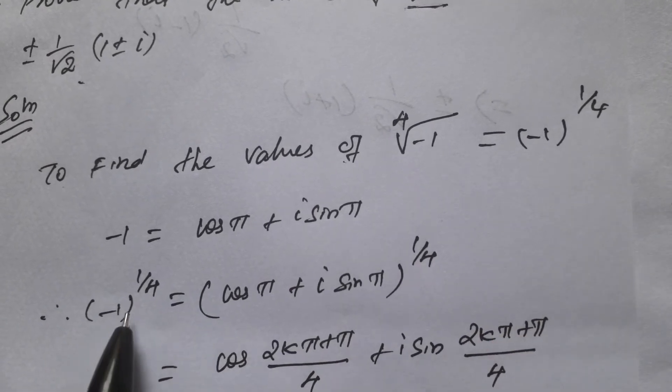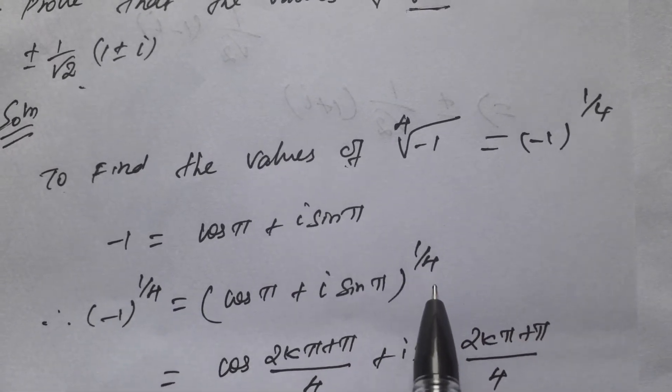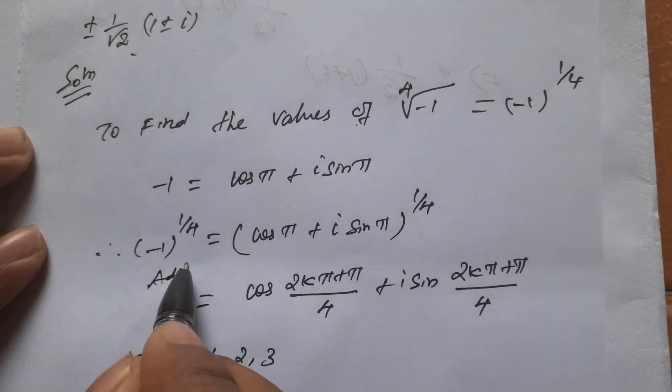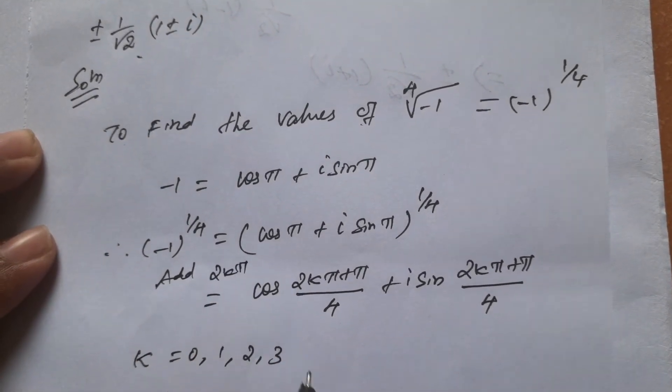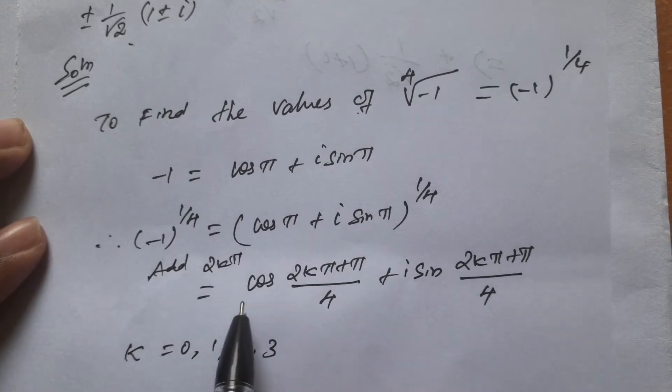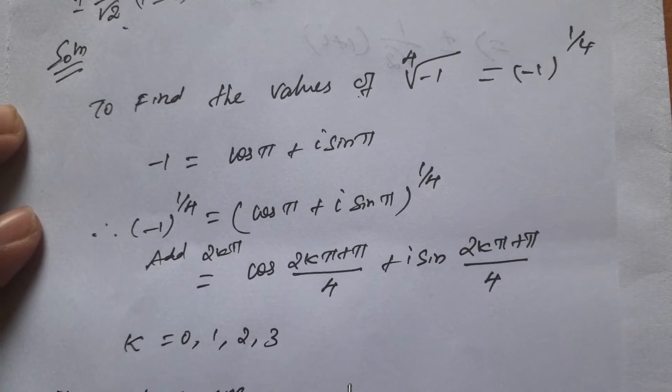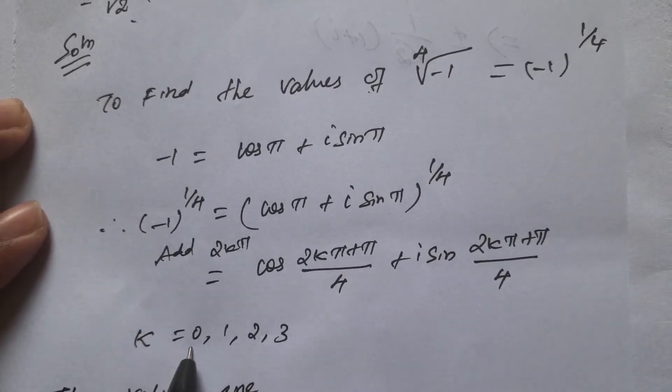This power, power 1 by 4. So we need to add 2k π in the formula, 2k π plus π by 4.